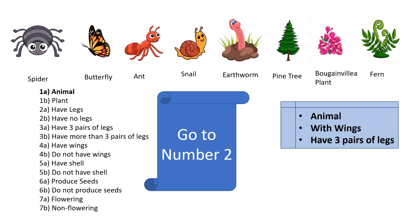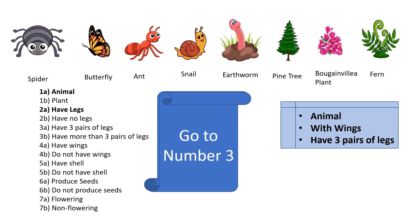Choosing 1A leads us to question number 2. Question number 2 asks whether our animal has legs or does not have legs. Based on the keywords, it is an animal with wings and three pairs of legs, so we know our animal has legs. We choose answer 2A, which tells us our animal has legs, and the dichotomous key asks us to go to number 3. Question number 3 asks whether our animal has three pairs of legs or more than three pairs of legs. We know it has three pairs of legs.